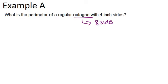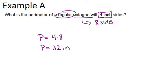Because it says it's regular, that means all 8 sides are the same length. So if each side is 4 inches, the perimeter, which is the distance all the way around, will just be 4 times 8, because there are 8 sides and each side has length 4 inches. Therefore, the perimeter will be 32 inches.